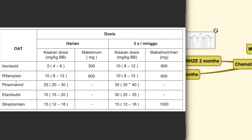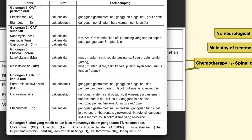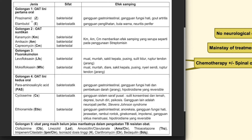The four drugs are isoniazid, rifampicin, pyrazinamide, and ethambutol, with doses in milligrams per kilogram for daily dosing with a maximum dose, and also dosages given three times per week. Each drug regimen carries side effects. Pyrazinamide can cause gastrointestinal disturbances and liver disturbances. Ethambutol can even cause color blindness or visual disturbances. Other less frequently used drugs can also cause gastrointestinal and liver disturbances, so monitoring of liver function is crucial when administering these drugs.